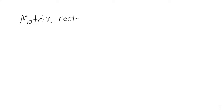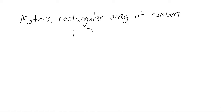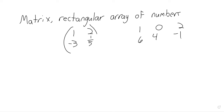A matrix is a rectangular array of numbers. So like one, two, negative three, one fifth, arranged in a square, or one, zero, two, six, four, negative one, arranged in a rectangle. Matrices are surrounded by either open parentheses or closed brackets.